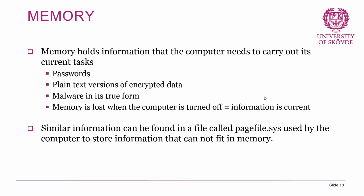To finish off this lecture, a brief discussion on memory. The memory — usually the RAM, the random access memory — is a storage unit that holds information a computer needs to carry out its current tasks. The memory is lost when the computer is turned off, so the information is current — it must have been placed in memory since the last power cycle. Since you can use the registry and other sources to figure out when the computer was last turned off, you can also figure out how current the information in memory is.